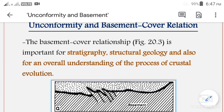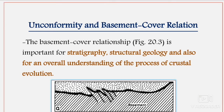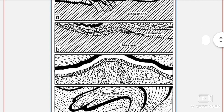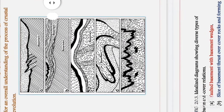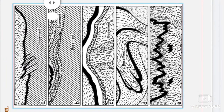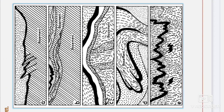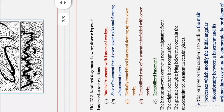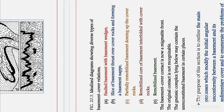The basement-cover relationship is important for stratigraphy, structural geology, and an overall understanding of crustal evolution. In the diagram, there are five figures labeled A, B, C, D, and E showing an idealized diagram of the diverse types of basement-cover relationships.